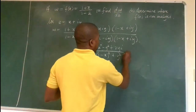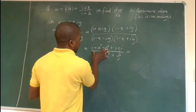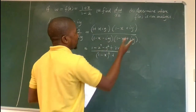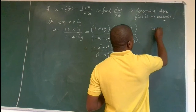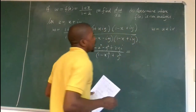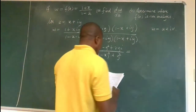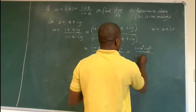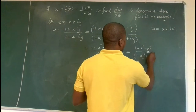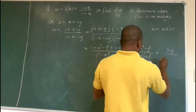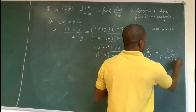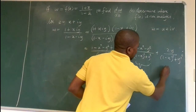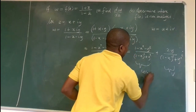We separate the expression into its real and imaginary parts to write w = u + iv. So u = (1 − x² − y²) / [(1 − x)² + y²] and v = 2y / [(1 − x)² + y²]. These are our two functions of two variables.